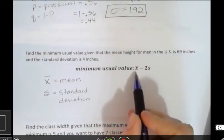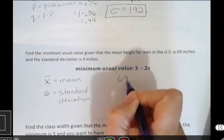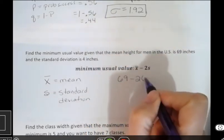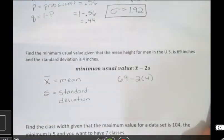So I just have to plug into that formula to find the minimum usual value. If the mean height was 69, and then I have 2 times the standard deviation, which is 4, then maybe you can do that even without a calculator. It looks like 69 minus 8, and that's going to be 61.